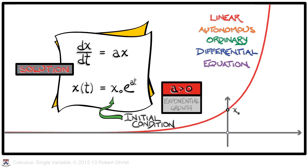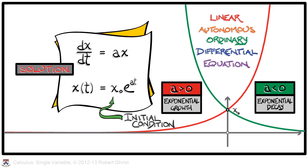What it does from there depends on a. If a is positive, then you get what is called exponential growth. You get an exponential function in t that is growing as t increases. On the other hand, if a is negative, then you have exponential decay, where the values of x are getting closer and closer to zero over time.